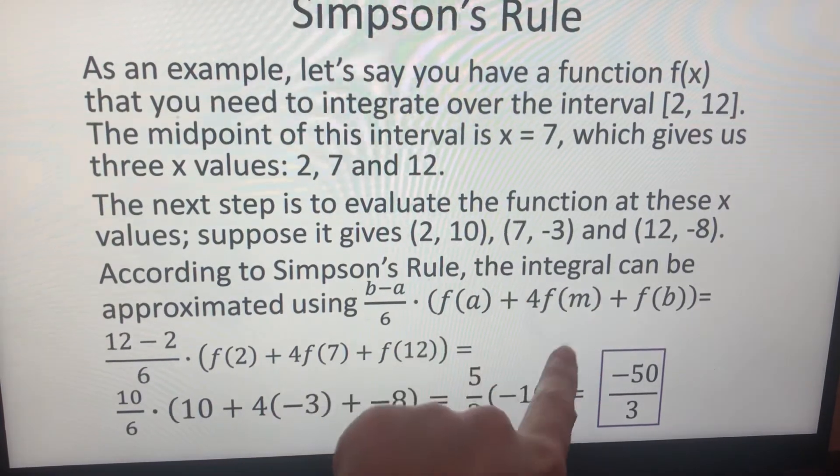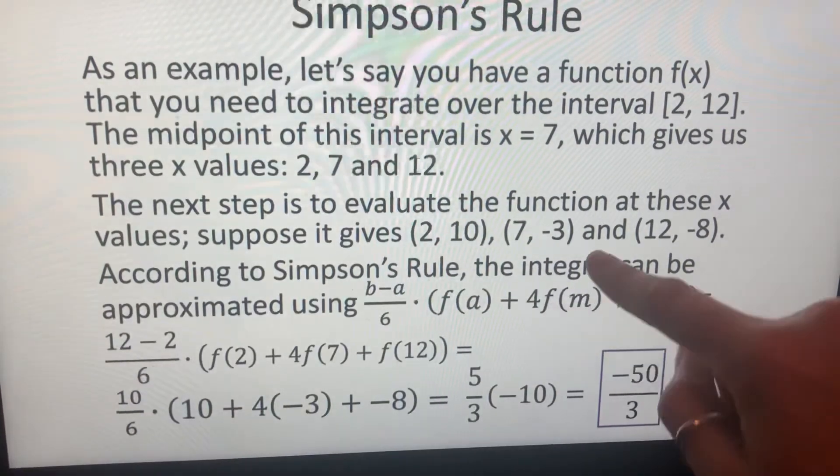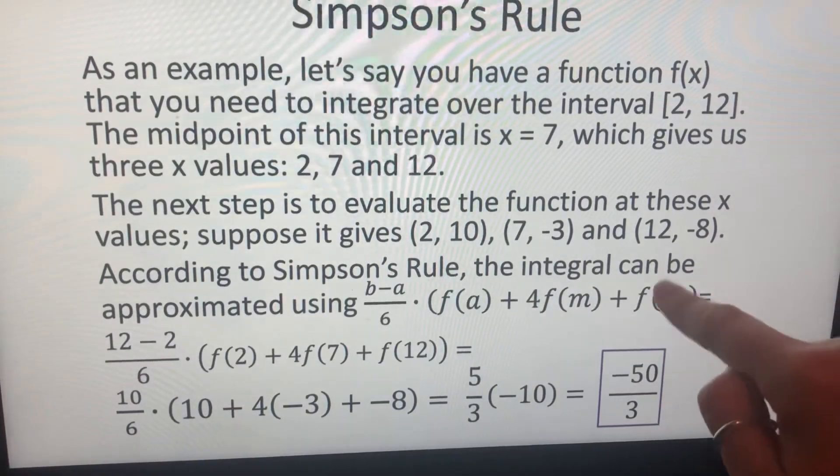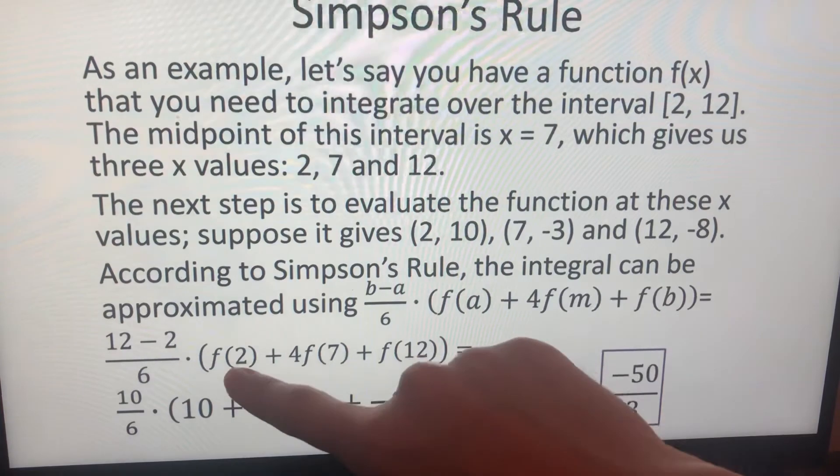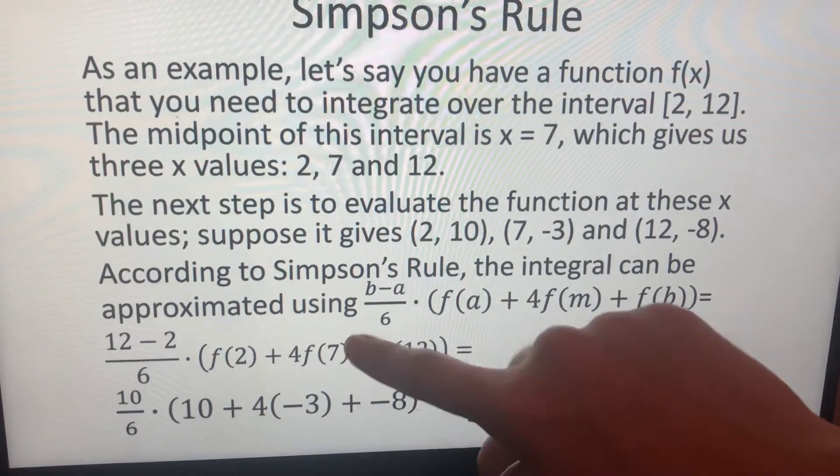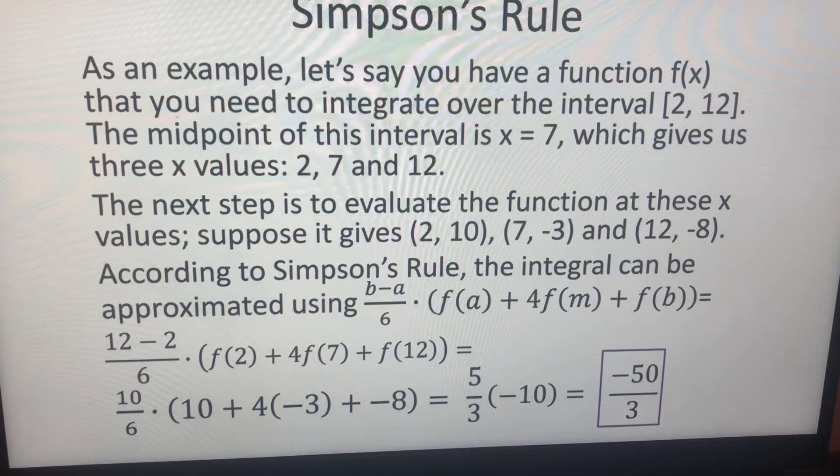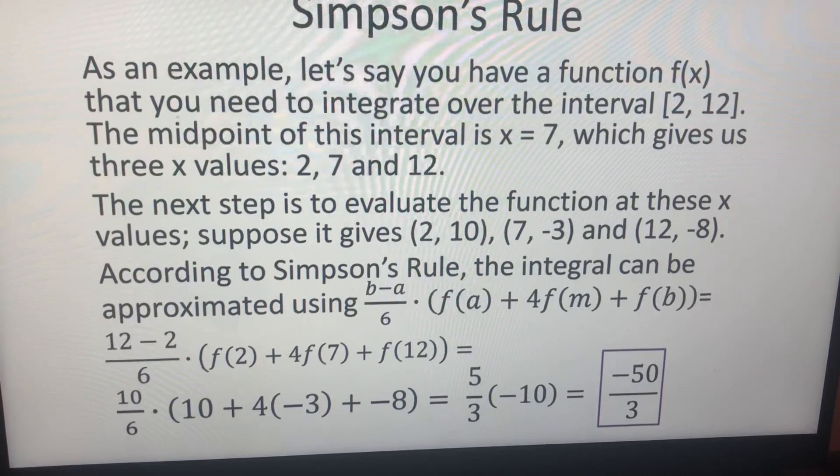Since we have only one point interval, it will be four. If you had more than that, you should go like two, four, two, four. And the last one is coming alone. f of 2, four f of 7, f of 12. What you need to do is just write the values of it and you can find the approximate integral between 2 and 12 like that.